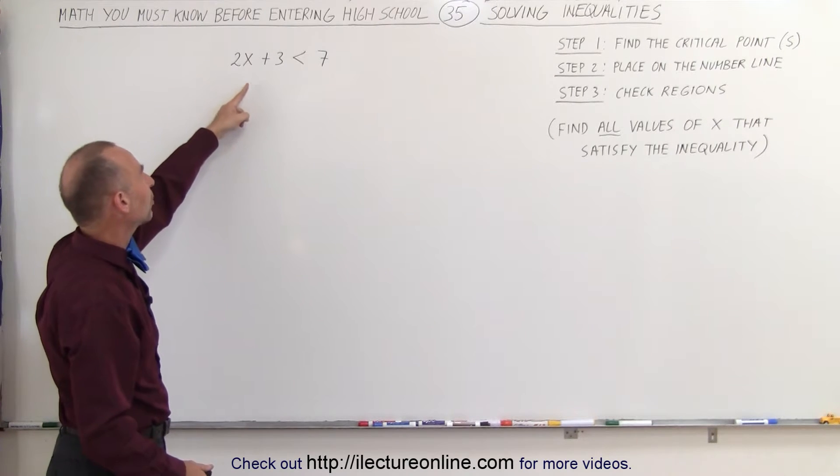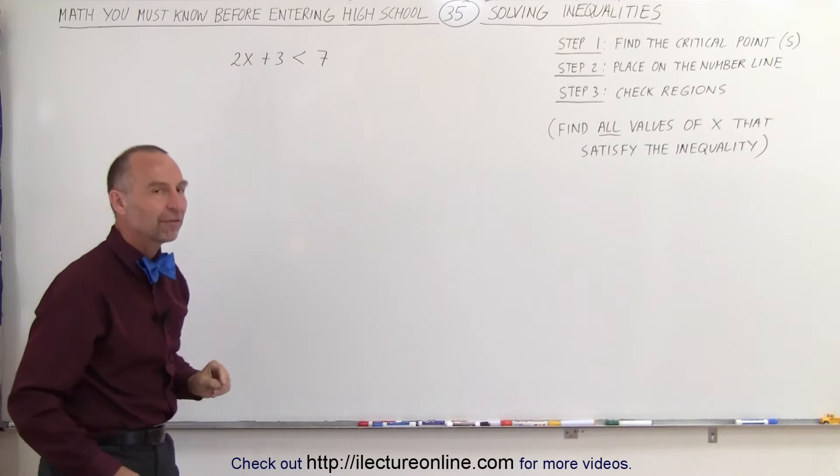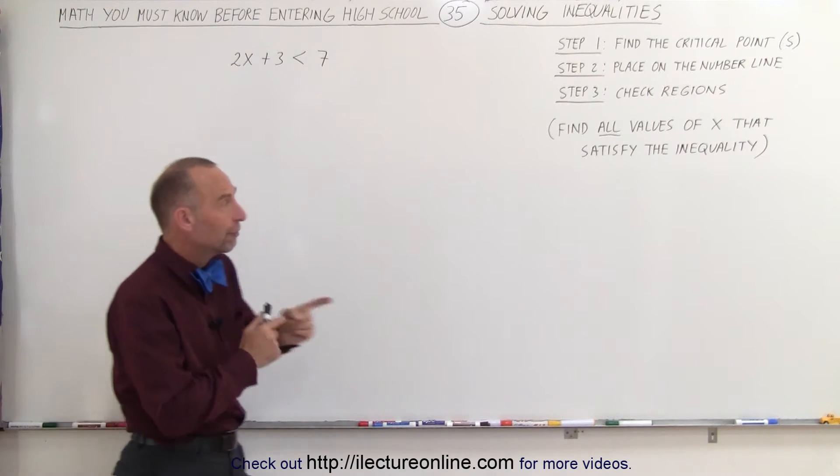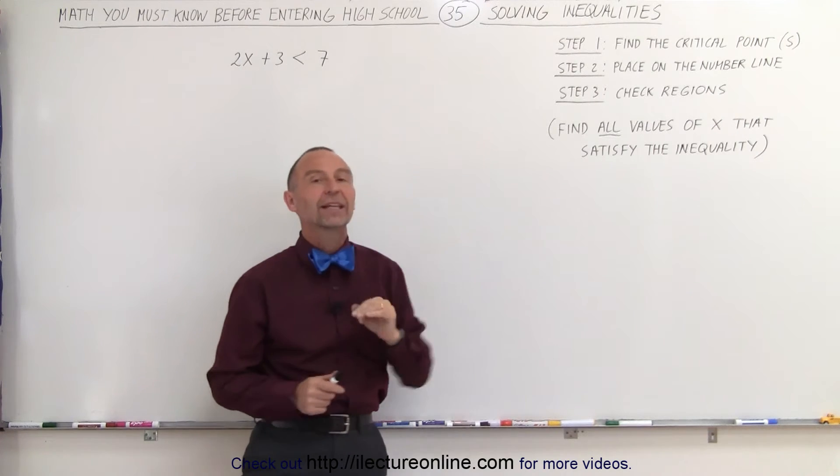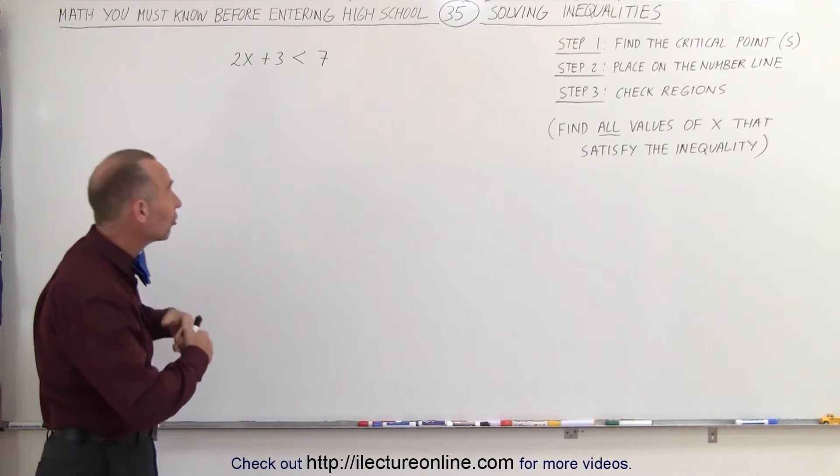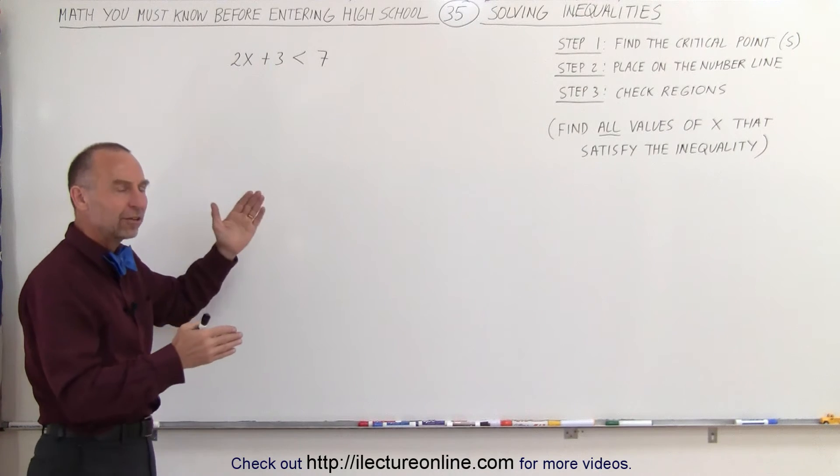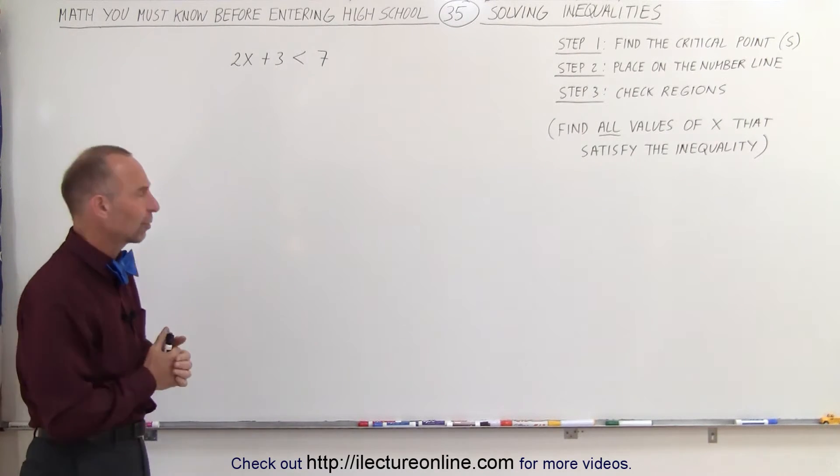Here's an inequality where 2x plus 3 is less than 7. Solving a linear inequality is solving for all the values of x that satisfy that inequality. So it's not just a single value, it's a multitude of values and we need to find all of them. It's usually a range, x between this value and that value or something like that.